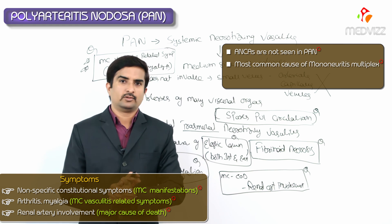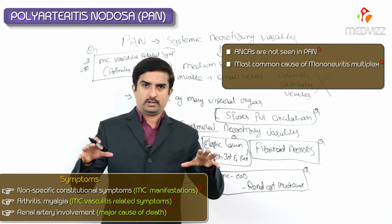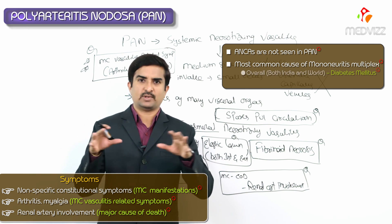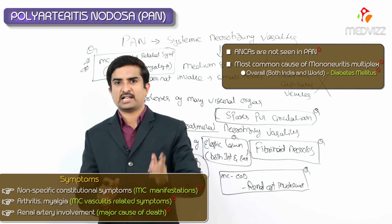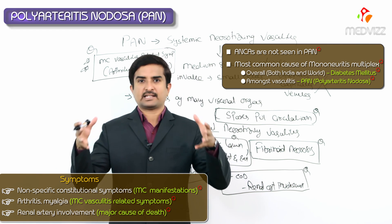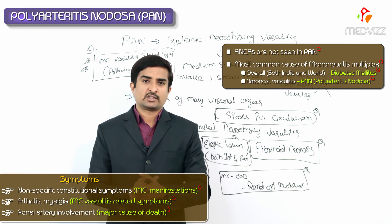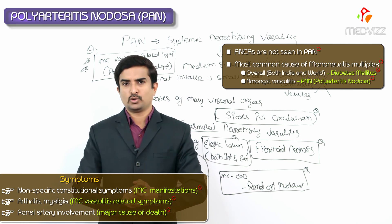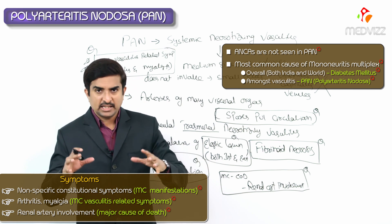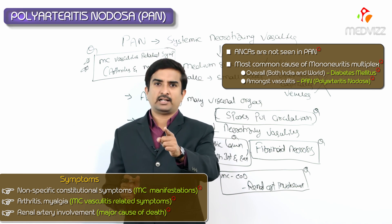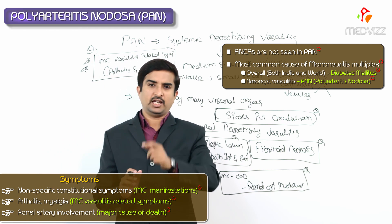PAN is the most common cause of mononeuritis multiplex among vasculitides. However, overall — in India as well as worldwide — diabetes mellitus is the most common cause of mononeuritis multiplex. Among vasculitis specifically, the answer is Polyarteritis Nodosa.